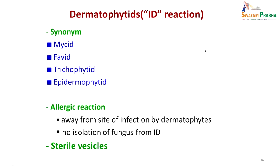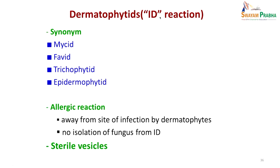In addition to dermatophyte infections of skin, hair, and nails, there are some infections known as dermatophytids or id reaction. Depending on which fungus is causing the infection, they are called mycid, favid, trichophytid, or epidermophytid. It is an allergic reaction — the patient presents with sterile vesicles on the skin. You could think it is viral infection, but the patient may be having a dermatophyte infection somewhere else in the body, far away from these vesicles. When you take fluid from these vesicles you cannot isolate any fungus — they are sterile vesicles. No fungal isolate is found in them.